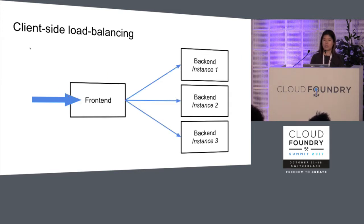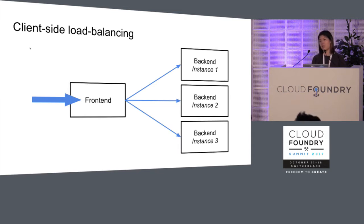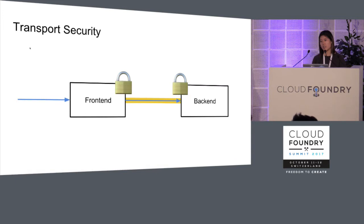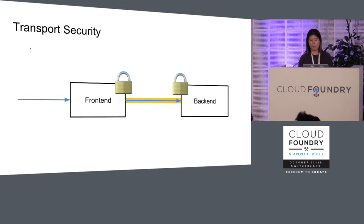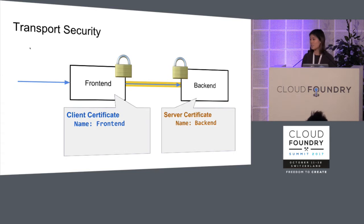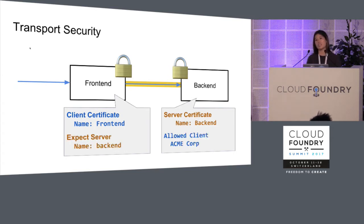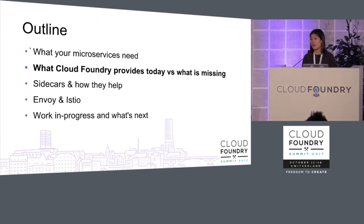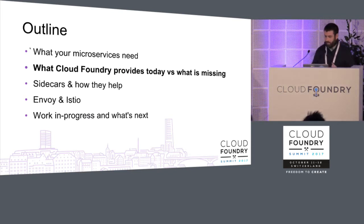If you load balance between all instances, your back end won't be overloaded because you're sending less traffic to each one — and you're following best practices. For transfer security, you want all your microservices communicating securely, most often by using certs from both the front end and back end to engage in mutual TLS. These are all best practices for microservices, and the question is: how do I implement all of them?